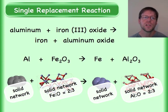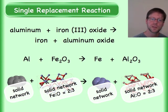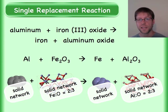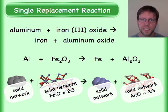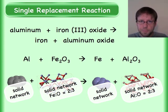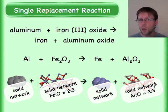One more example: aluminum plus iron(III) oxide goes to iron plus aluminum oxide. This is a pretty famous reaction called the thermite reaction — it puts off tons of energy. Look it up on YouTube; they have pictures of people using this reaction to weld the actual metal part of railroad tracks together because it gets so hot.